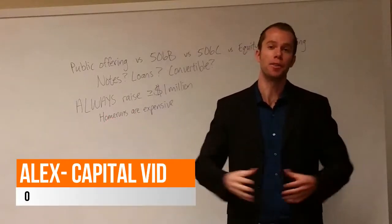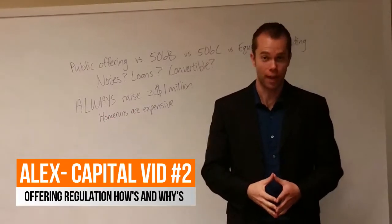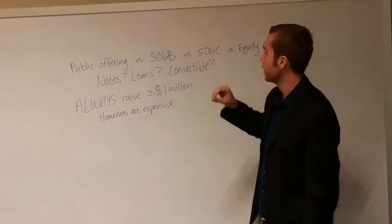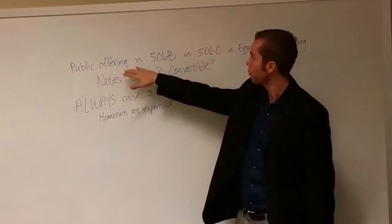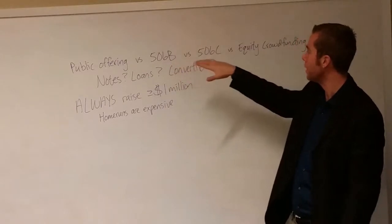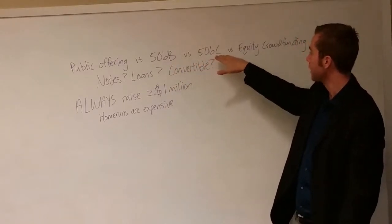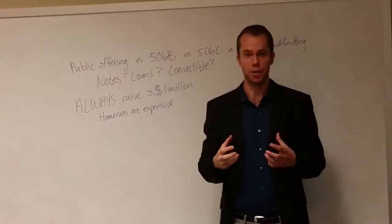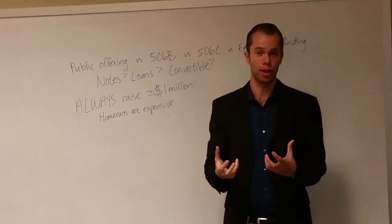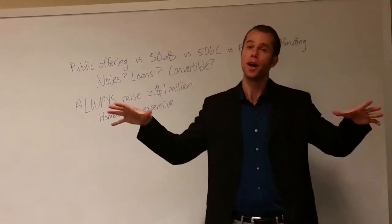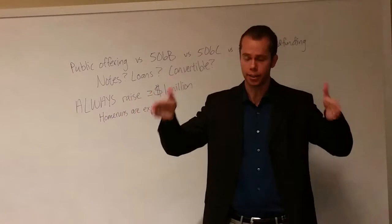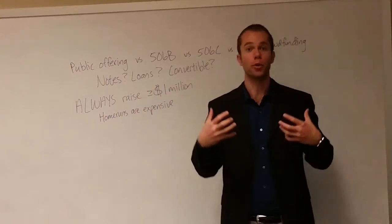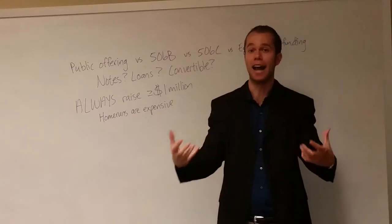Hello everybody, this is Alex with part two of our capital team video and we're going to dig in a little bit more today. We're going to explain the difference between what a public offering is, a 506B, 506C, and equity crowdfunding. Those are the different ways that you can essentially give away equity for your company. There are a bunch of other ones but we're going to stick to those since that's what our business is dealing with and what the majority of businesses are dealing with now.